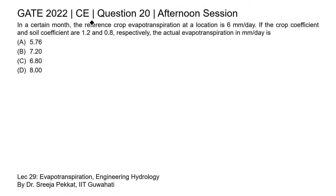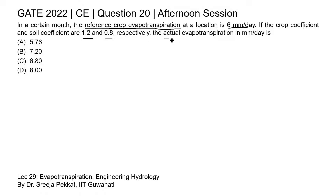This is question 20 of the civil engineering paper of GATE 2022 afternoon session. In a certain month, the reference crop evapotranspiration at a location is 6 millimeters per day. The crop coefficient and soil coefficient are 1.2 and 0.8 respectively. We need to compute the actual evapotranspiration.